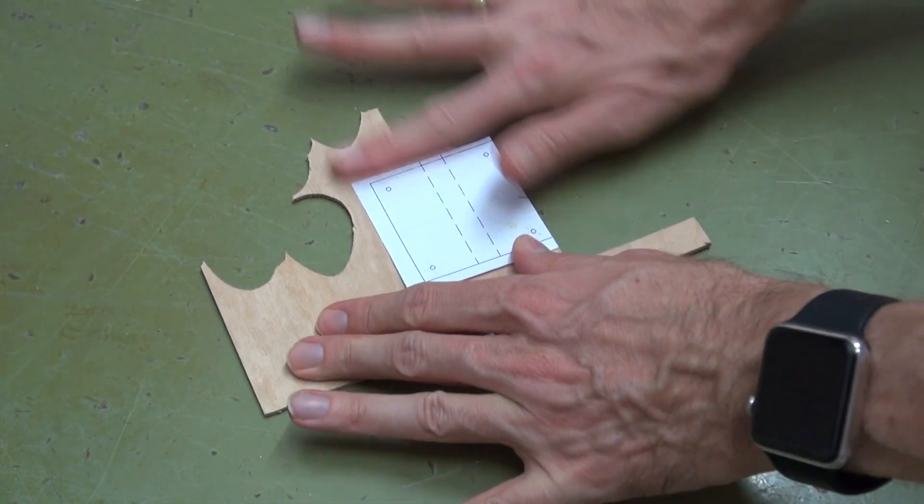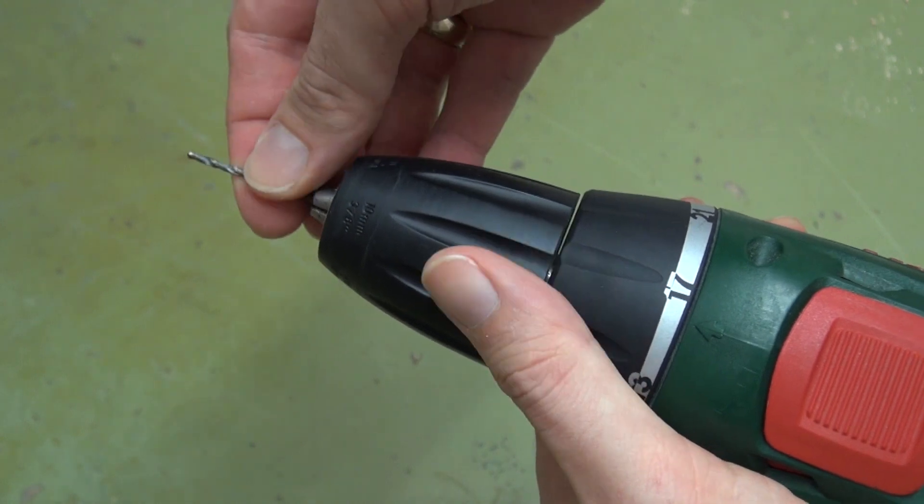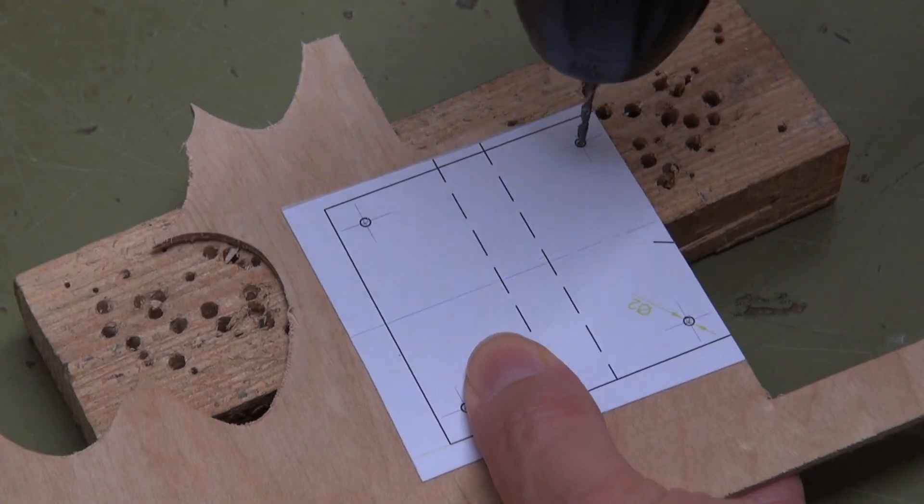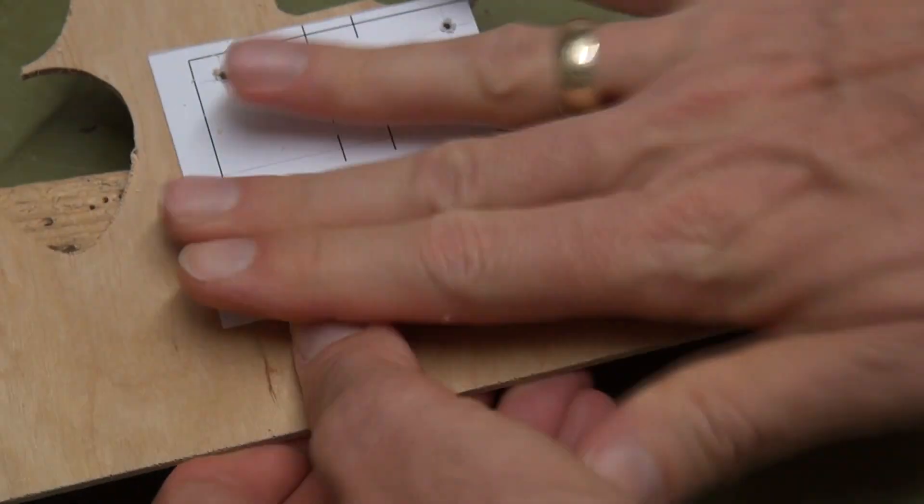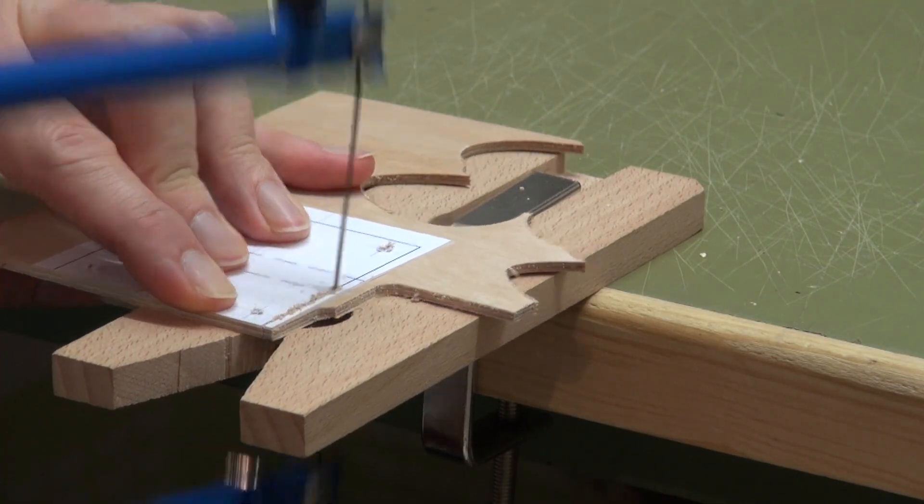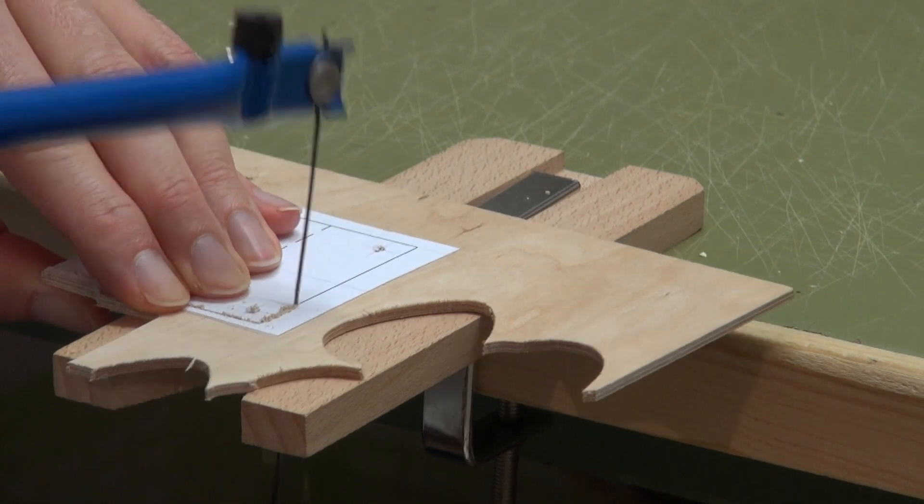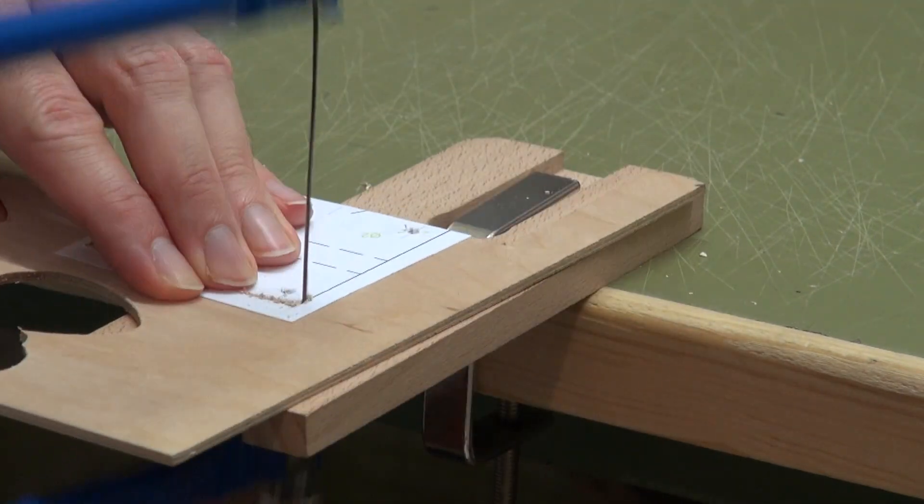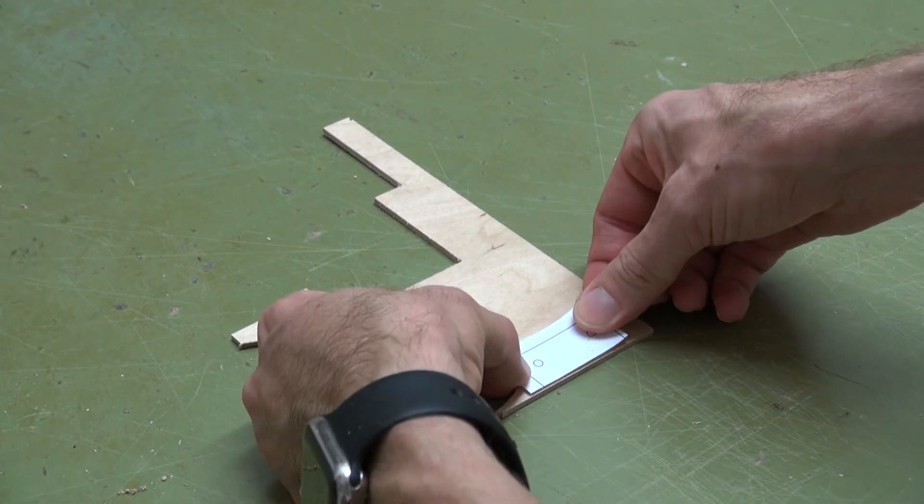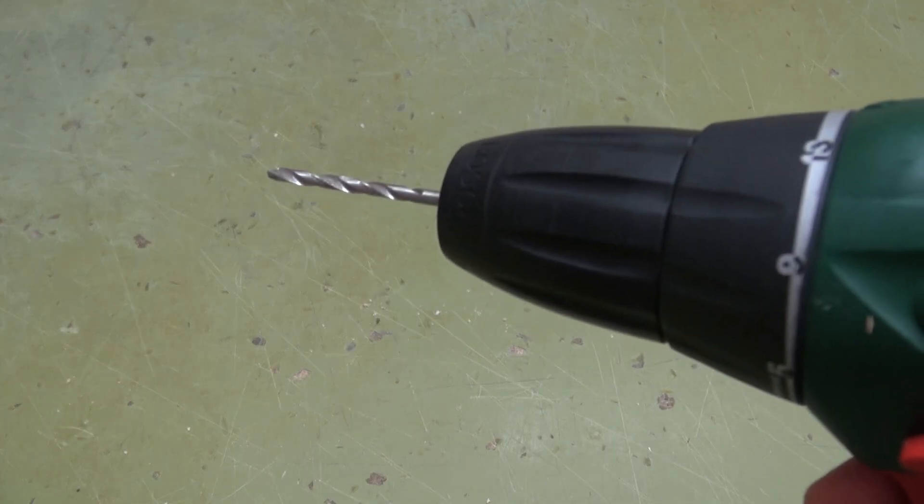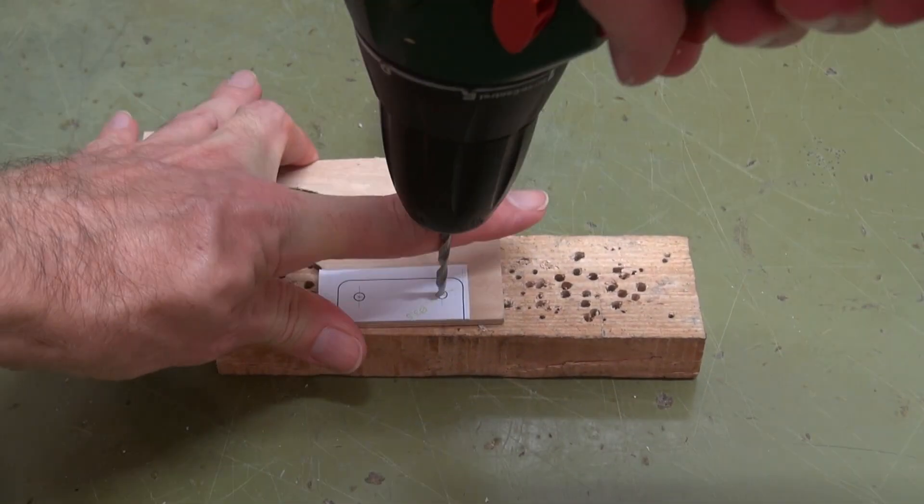The next part is the base plate. Attach the plan to the 2.5 millimeter plywood. Again use a 2 millimeter drill to drill the holes. The wings are also made from 2.5 millimeter plywood. This time use a 3.5 millimeter drill.